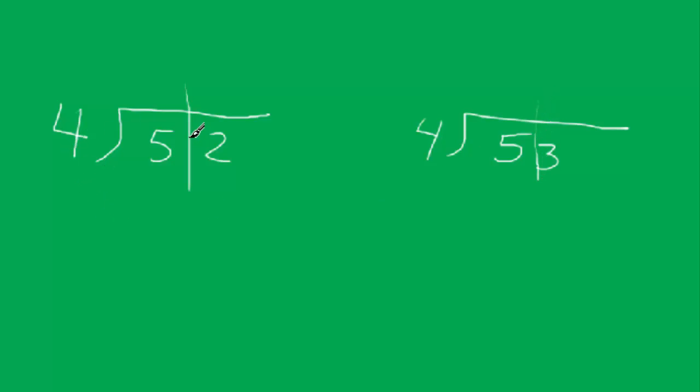So we'll do this: 4 into 5. We know that 4 will go into 5 one time. So there's 1. 1 times 4 equals 4, and 5 minus 4 is 1, and we bring down the 2. So now we have 12.